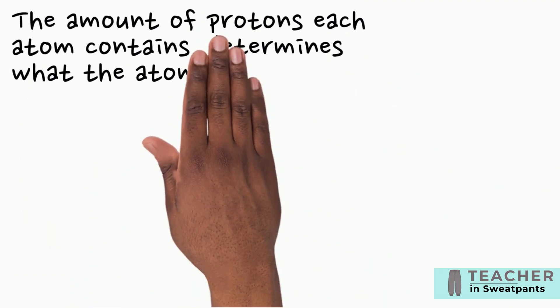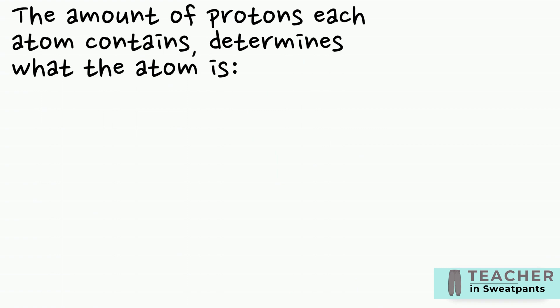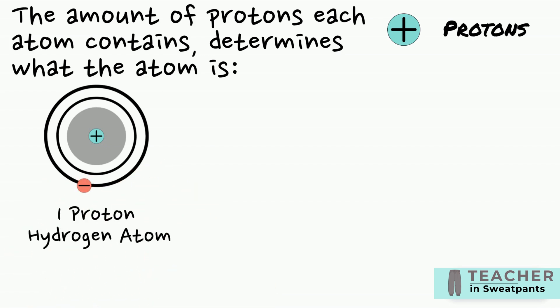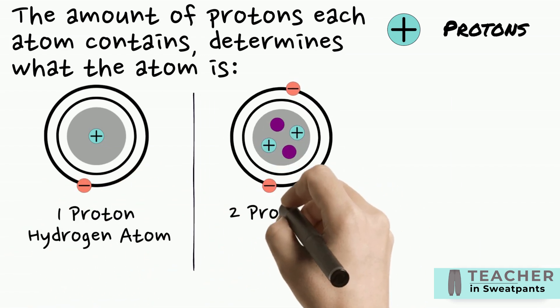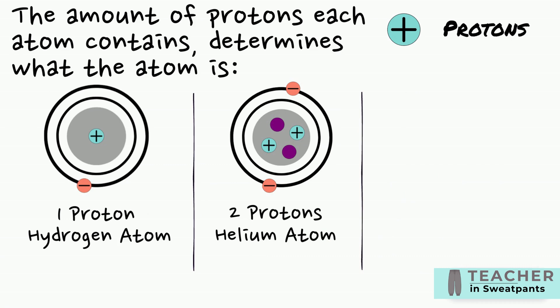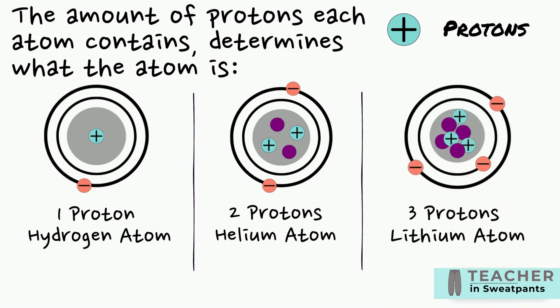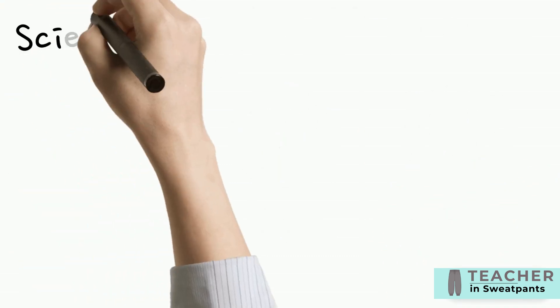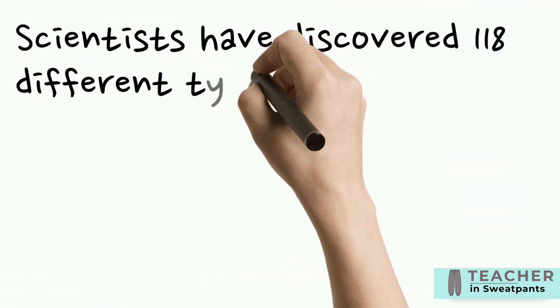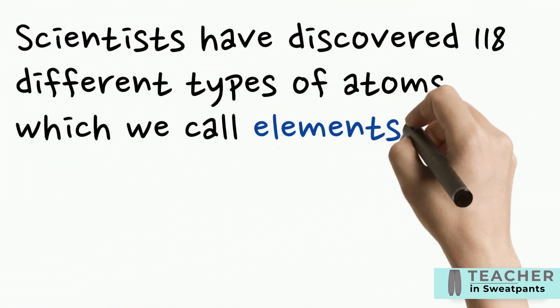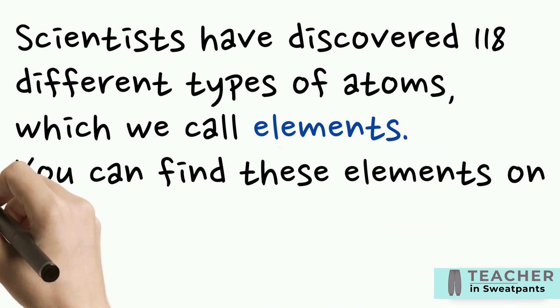The amount of protons each atom contains determines what the atom is. One proton is a hydrogen atom, two protons a helium atom, and three protons a lithium atom. Scientists have discovered 118 different types of atoms, which we call elements.